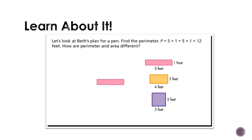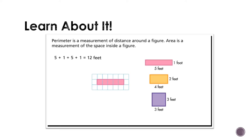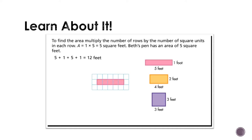Let's look at Beth's plan for a pen. Find the perimeter: P equals 5 plus 1 plus 5 plus 1 equals 12 feet. How are perimeter and area different? Perimeter is a measurement of distance around a figure. Area is a measurement of the space inside a figure. To find the area, multiply the number of rows by the number of square units in each row. A equals 1 times 5 equals 5 square feet. Beth's pen has an area of 5 square feet.